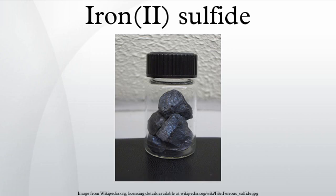As organic matter decays under low-oxygen conditions, such as in swamps or dead zones of lakes and oceans, sulfate-reducing bacteria use the sulfates present in the water to oxidize the organic matter, producing hydrogen sulfide as waste. Some of the hydrogen sulfide will react with metal ions in the water to produce metal sulfides, which are not water-soluble.